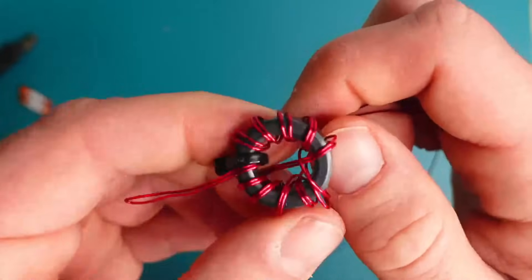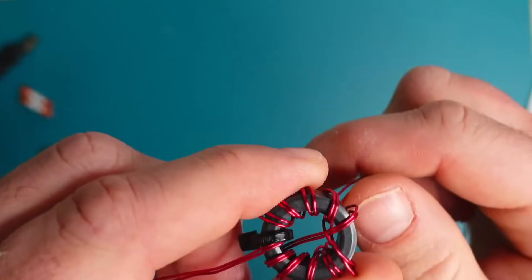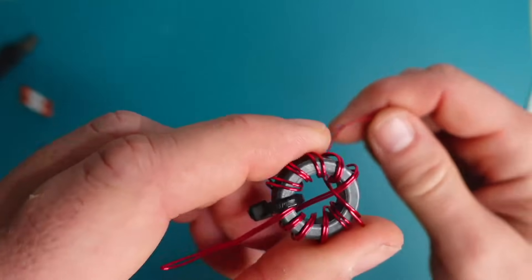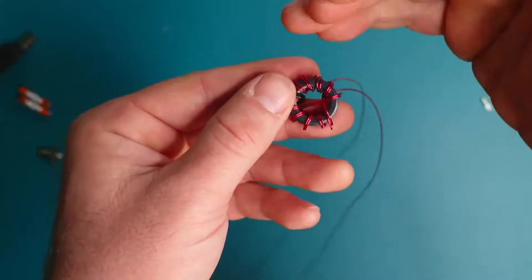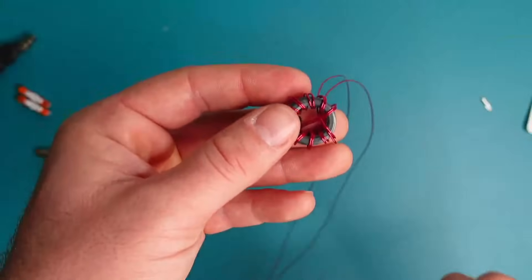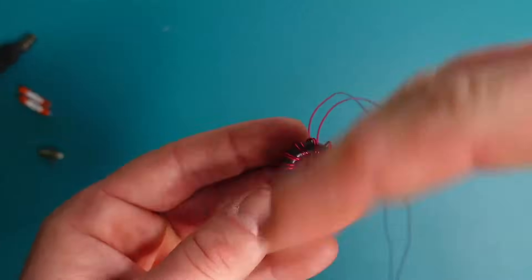Also a very important note is as you're wrapping the toroid you want to make sure that you don't go over that crossover with your magnet wire. Doing so will cause it to when you pull on the magnet wire pull that crossover toward one side and basically we're trying to keep everything equal spaced.